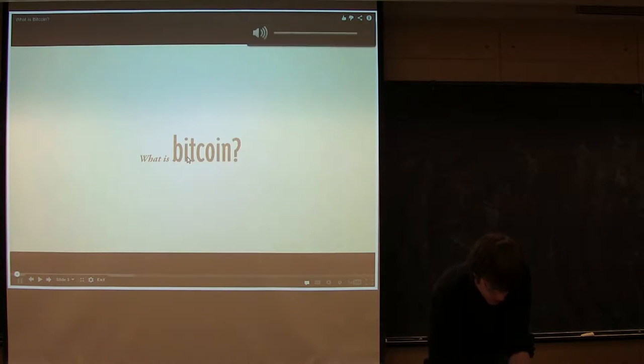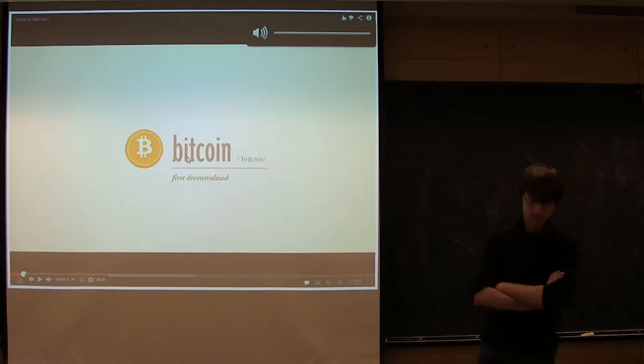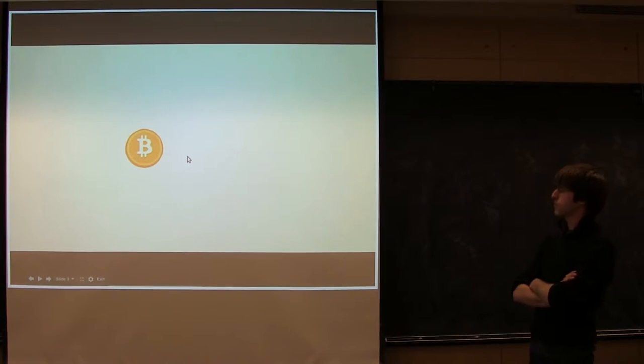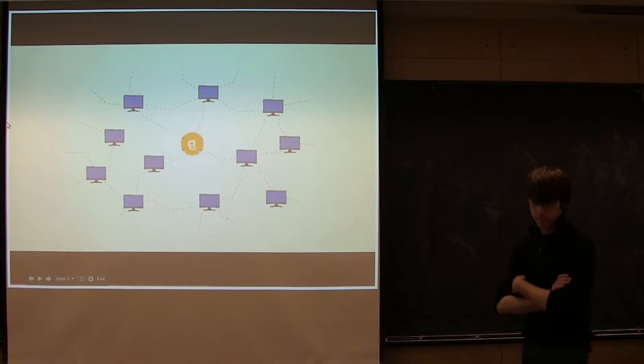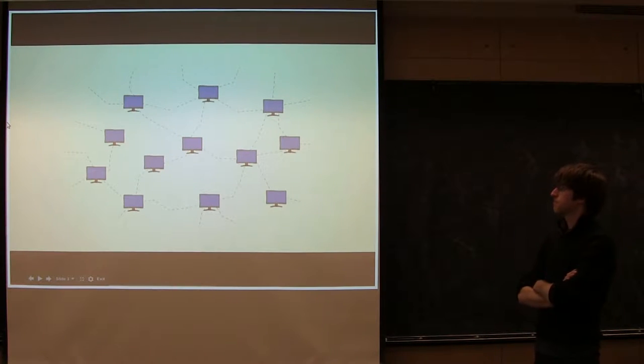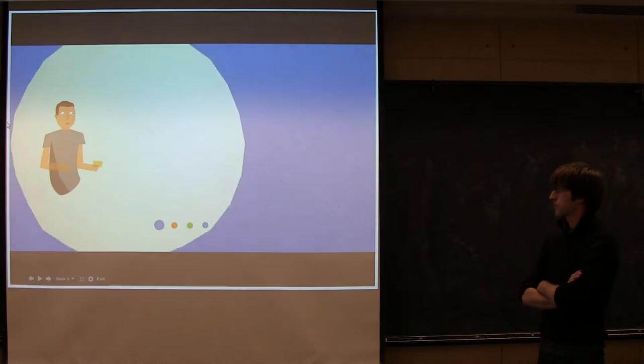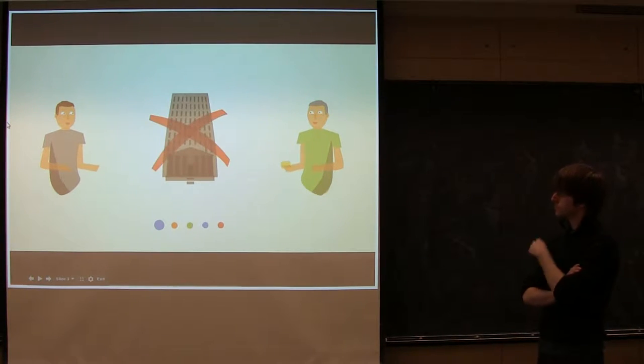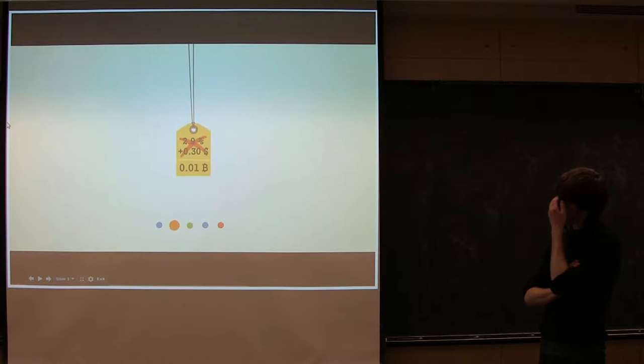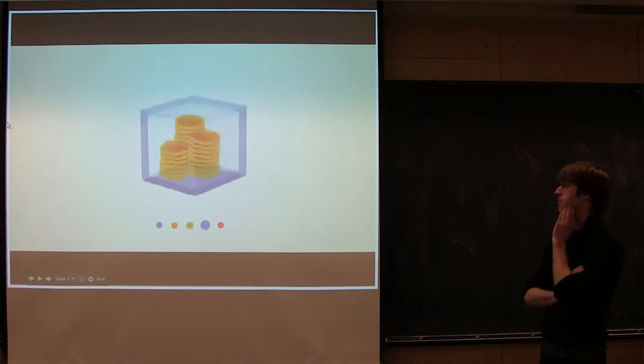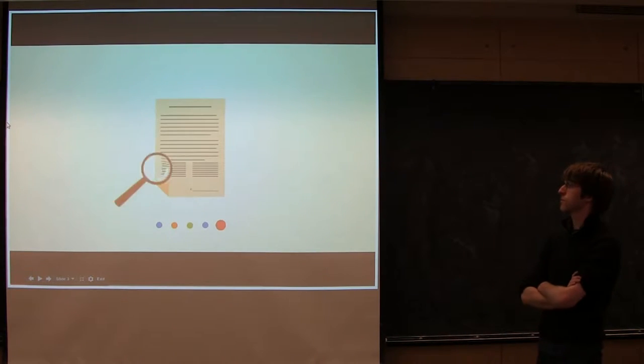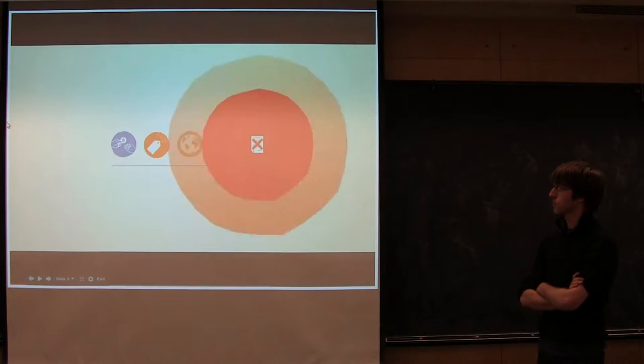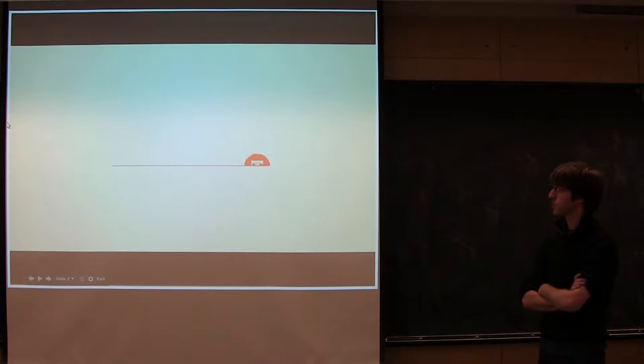What is Bitcoin? Bitcoin is the first decentralized digital currency. Bitcoins are digital coins you can send through the Internet. Compared to other alternatives, Bitcoins have a number of advantages. Bitcoins are transferred directly from person to person via the net without going through a bank or clearinghouse. This means that the fees are much lower. You can use them in every country, your account cannot be frozen, and there are no prerequisites or arbitrary limits.